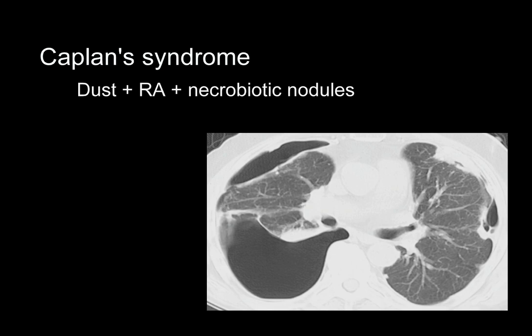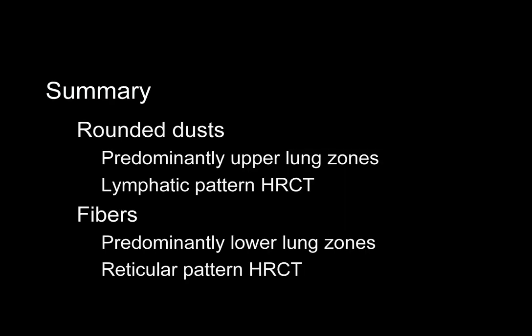Finally, coal workers with rheumatoid disease may develop nodules even after relatively low exposure to dust — this is Caplan's syndrome. The lesions are typically subpleural; they may grow rapidly, cavitate, and produce a pneumothorax. Although unusual, Caplan's syndrome may also develop in those with asbestos exposure. In summary, round dusts tend to concentrate in the upper lung zones, with nodules aggregating along the lymphatics in the bronchovascular bundle, centriacinar lobule, and subpleural venous plexus. Fibers, on the other hand, tend to stay where they are deposited in the lower lung zones, with peripheral reticular fibrosis as the predominant pattern.